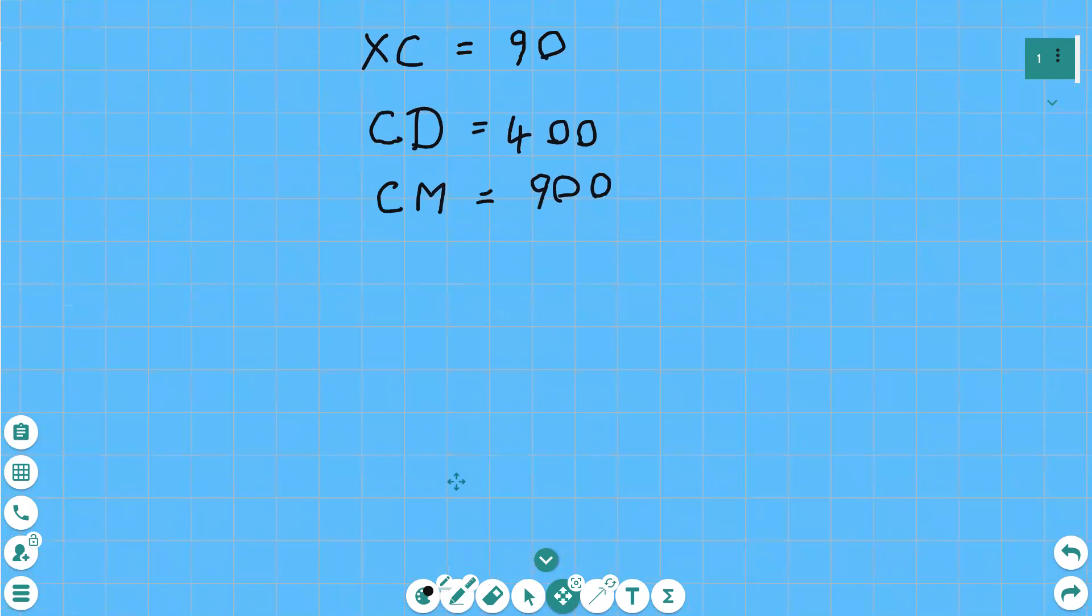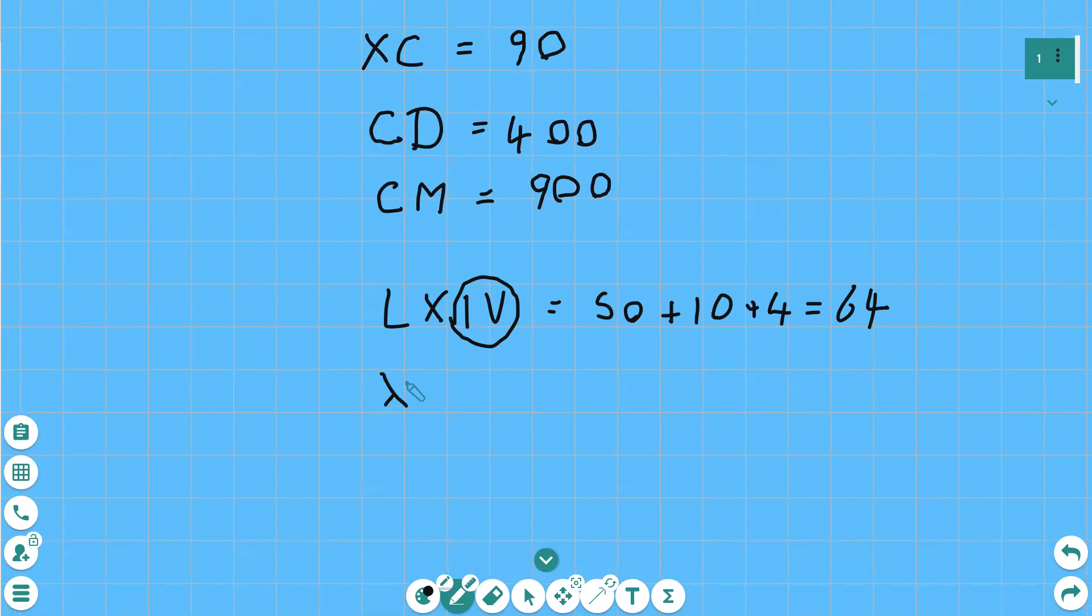So for example LXIV. Well we say L is 50 isn't it plus 10 fine. Then we go oh there's a 1 before the 5. That's a sign that that must be 4. Which is going to be 64 is it not? And then we could have XIX. X is 10. Oh but there's a 1 coming in before the X. So that means that that must be a 9. 19.